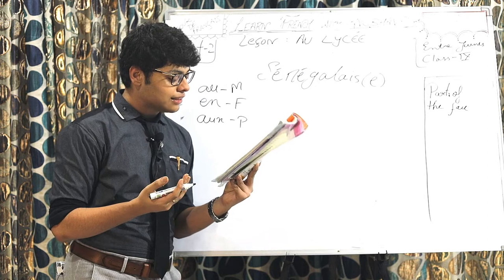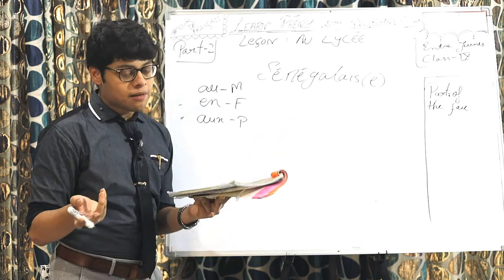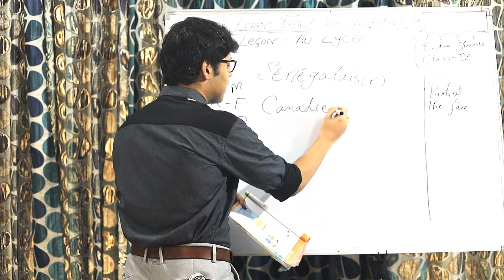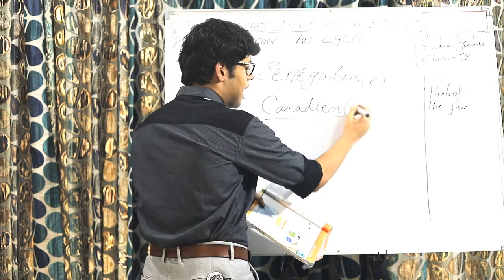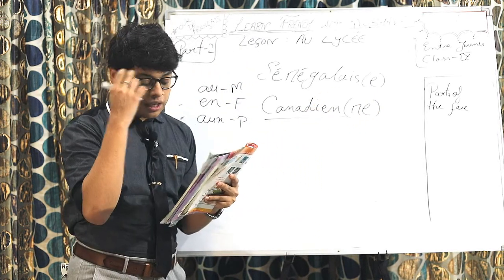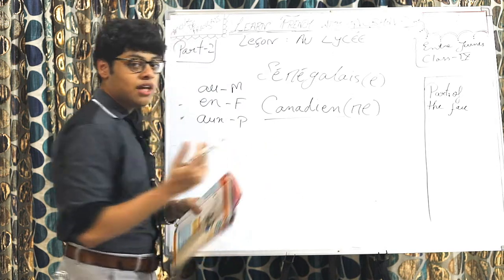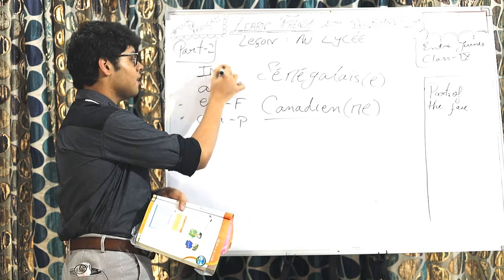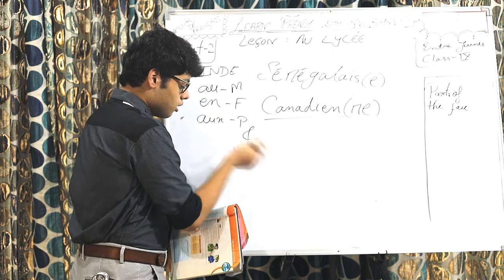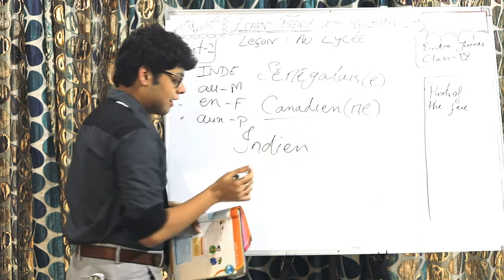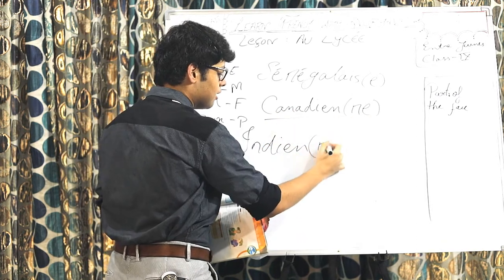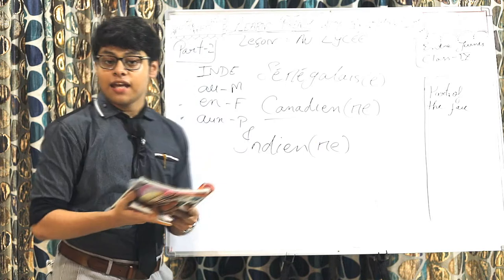Now we have the next country as Canada. O, Canada. Canada is again a masculine country. Their nationality, Canadian, in French is written like Canadia for masculine. And if we add one extra N and an E at the end, it becomes feminine. These two were the masculine countries. Coming towards the third one, we have a feminine country, India. India is and in French. And the nationality, Indian, is like this, India. Simple enough for male. And for female, same followed just like Canada. We add an N and E at the end to make it female.